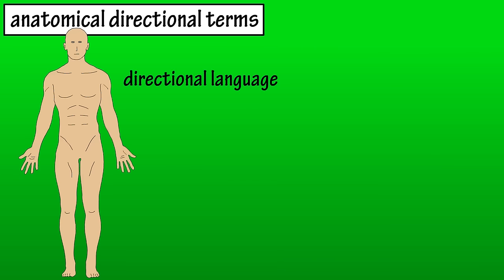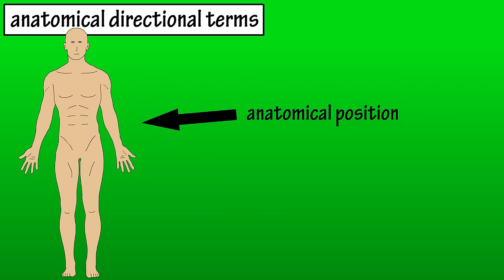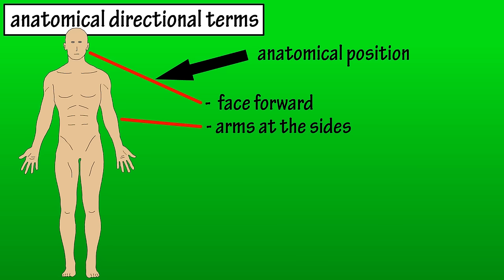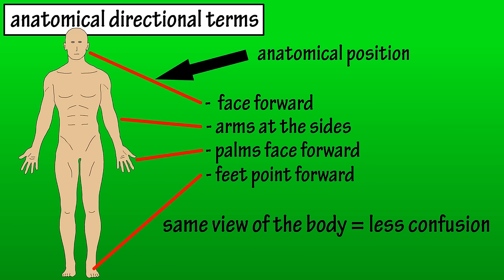Anatomical directional terms: a directional language of anatomy exists in order to minimize confusion when discussing areas or specific points on the body. This directional language or terminology is used in reference to the anatomical position. The anatomical position is when a person stands erect, face pointing forward, arms at the sides, palms facing forward, and feet also pointing forward. If everyone is looking at the body in the exact same position, there will be less confusion when discussing anything related to anatomy.